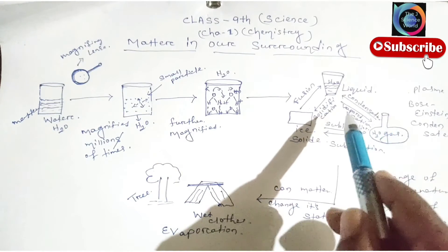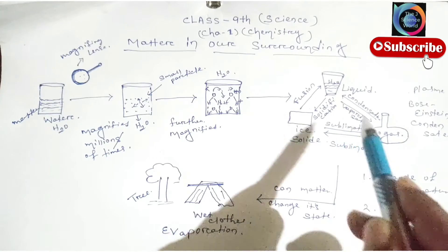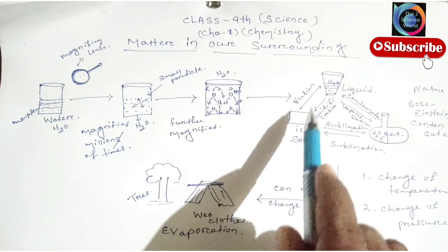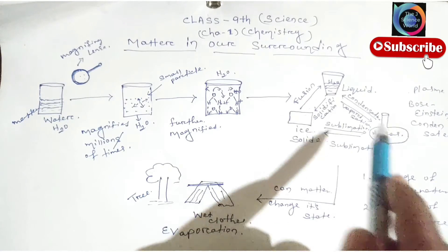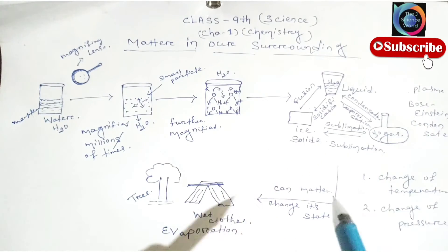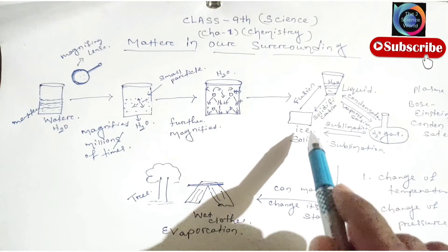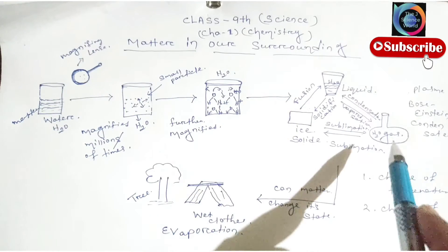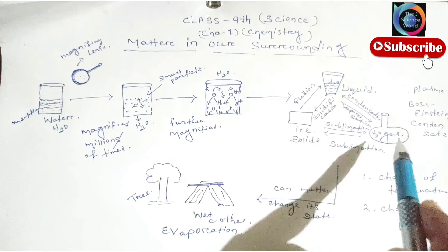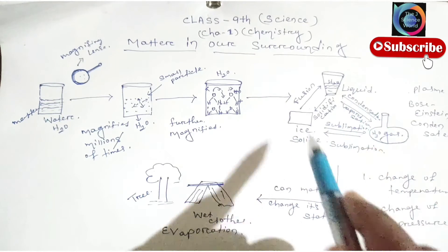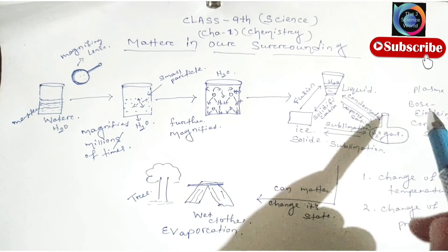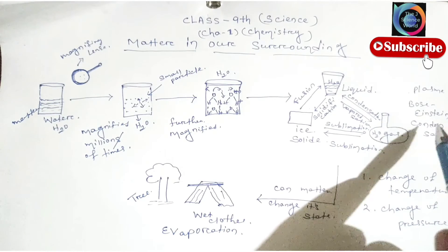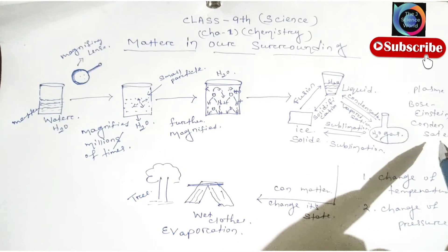This is our fourth structure. These structures represent the states of matter. There are solid state, liquid state, and gaseous state. In addition to these, two more states are possible — that is plasma state and Bose-Einstein condensation state.